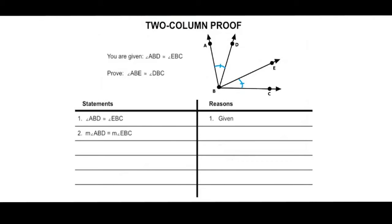Next, statement two is that the measure of angle ABD is equal to the measure of angle EBC. Reason number two is the definition of congruent angles, because if two angles are congruent, they have the same measure — that's the definition of congruent angles.